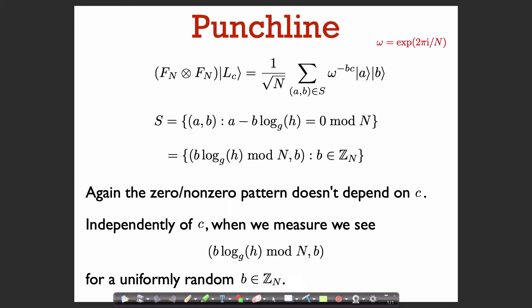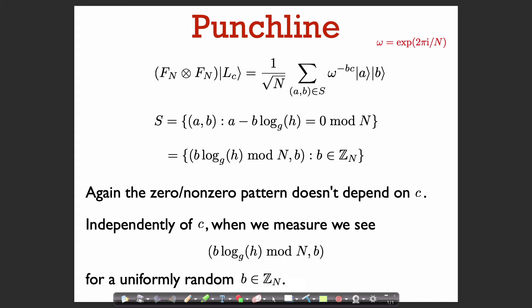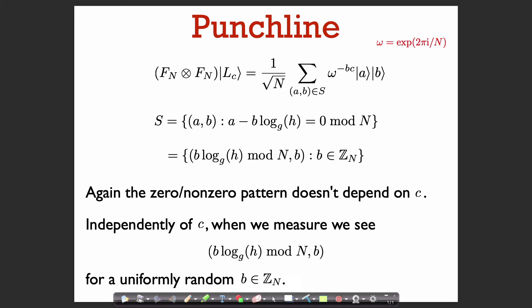This is very similar to what we saw in the period finding problem. The zero/non-zero pattern doesn't depend on which coset we're looking at — it doesn't depend on the value of c. C only plays a role in the phase and doesn't change which elements have non-zero amplitude versus zero amplitude. So independently of our measurement in the second step, after we apply this Fourier transform and measure, we're going to see an element of the form b times log base g of h mod n, comma b, for b chosen uniformly at random in Z_n.